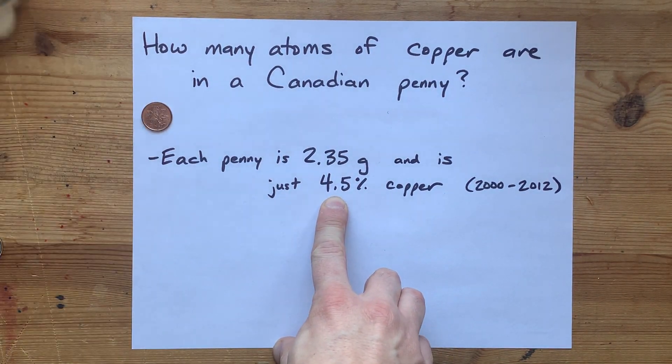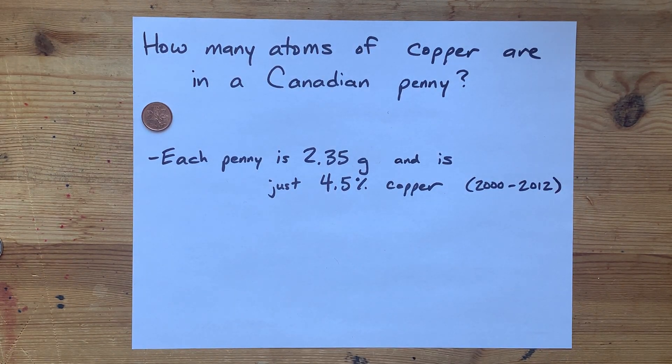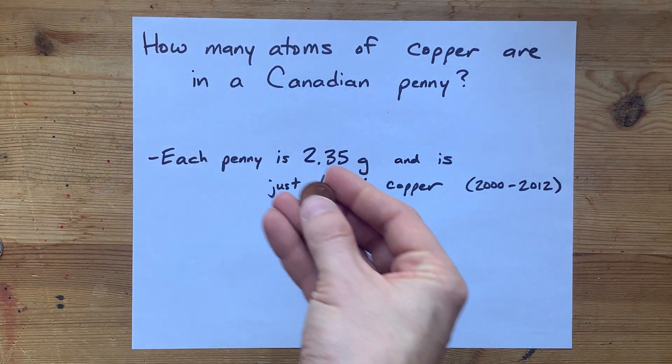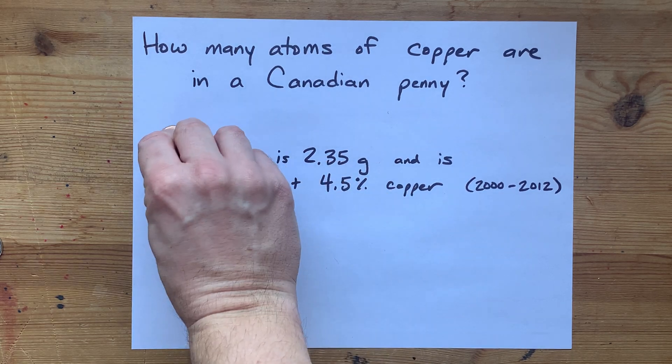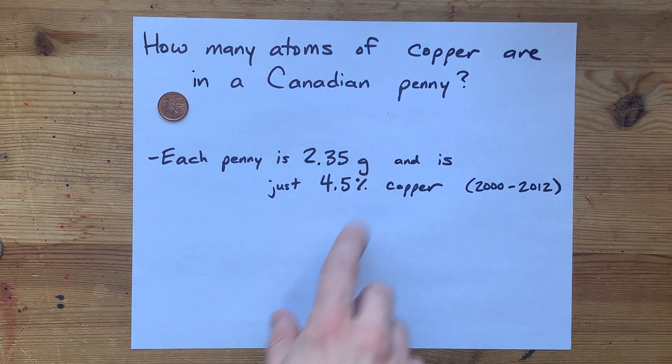That's because copper got expensive in the 2000s. Now they're mostly steel with a small amount of zinc, and they're just plated in copper. So it's 4.5% by mass.